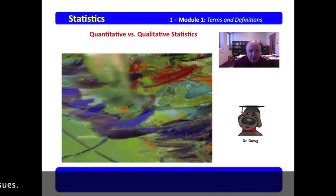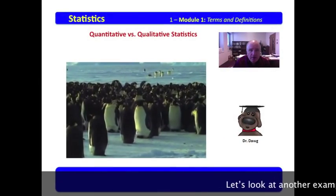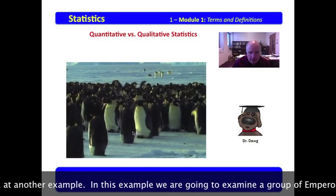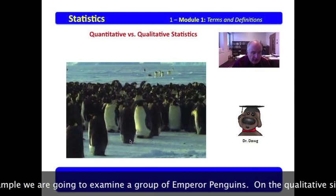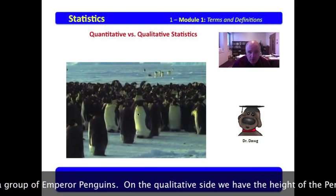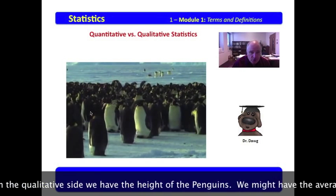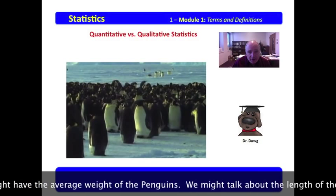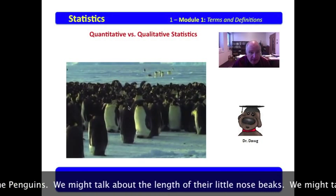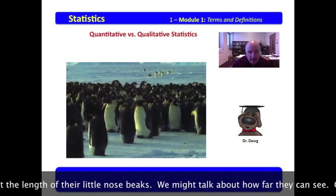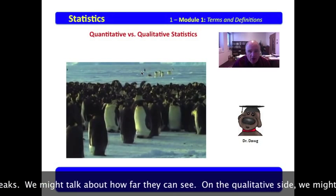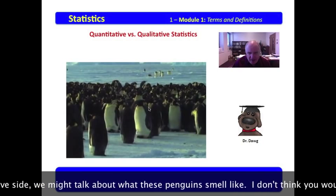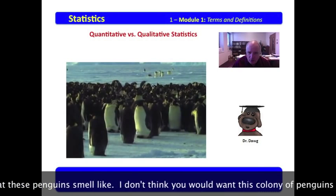Let's look at another example. In this example, we are going to examine a group of emperor penguins. On the quantitative side, we have the height of the penguins. We might have the average weight of the penguins. We might talk about the length of their beaks. We might talk about how far they can see.